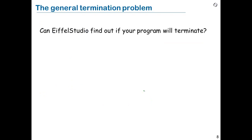Now we've covered the idea of the variant and how it guarantees loop termination. But let's generalize the discussion a bit into something very fundamental in computer science. You might ask: why do I have to invent a variant? Why can't I ask my development environment — EiffelStudio, Eclipse, or some other compiler — to find out whether my loops will terminate and tell me if they won't? After all, compilers do all kinds of things for us, like type checks ensuring you don't manipulate an integer like a real number.